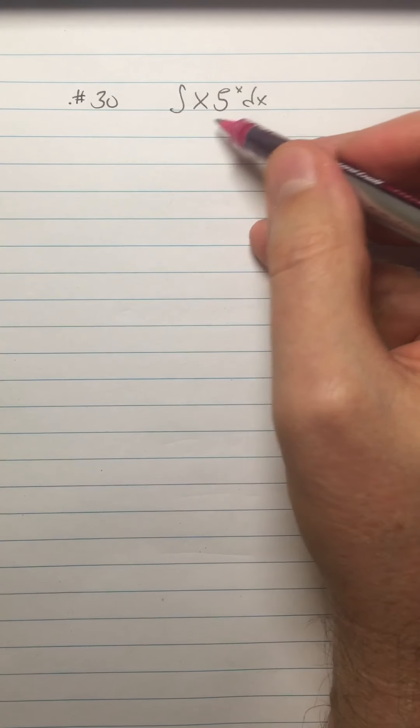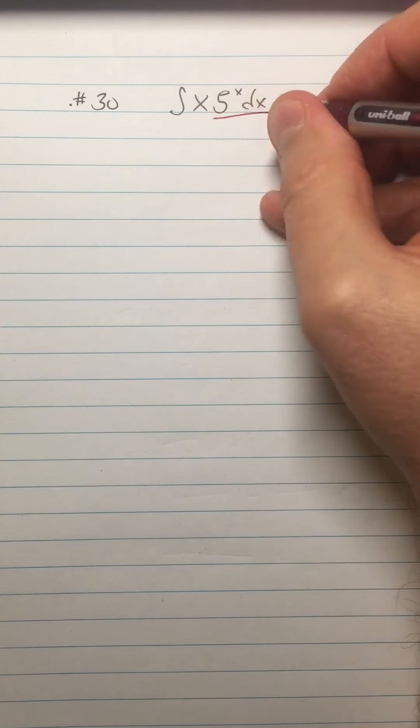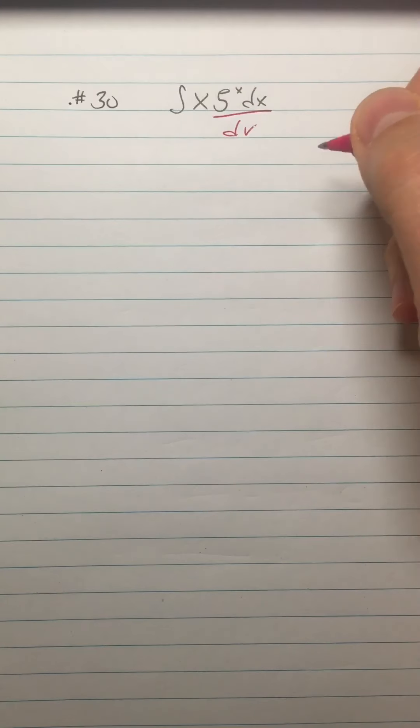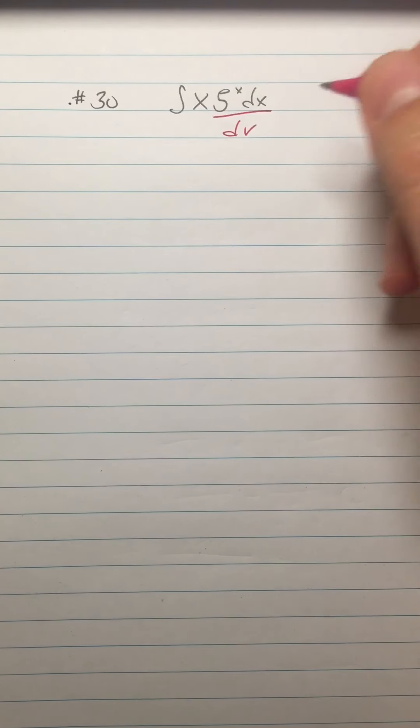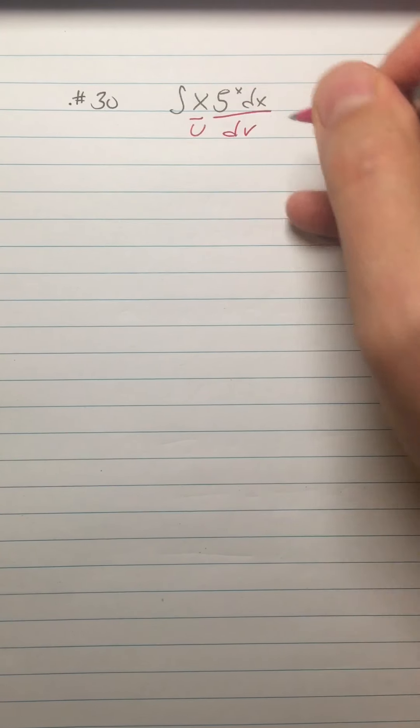All right. So if I have just an x by itself, a lot of times I'm going to want that to be u because when I do the derivative, it'll go away. All exponential functions are good candidates for dv because when I anti-differentiate them, they don't get any more complicated. They just stay the same. So this is going to be my u and this is going to be my dv.